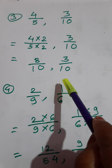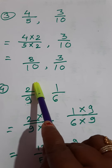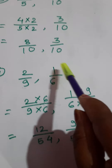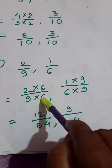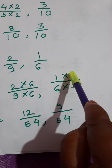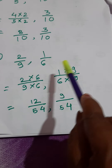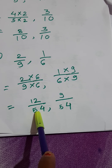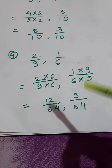See the fourth example: 2 upon 9 and 1 upon 6. Here also, multiply the first fraction by the second denominator and multiply the second fraction by the first denominator. So 2 upon 9, multiply by 6 over 6. And multiply the second fraction 1 upon 6 by the first denominator, that is 9 over 9. So: 2 sixes are 12, 9 sixes are 54. Similarly, 1 nine is 9, and 6 nines are 54. Now you have the equal denominator — they are like fractions. Got it?